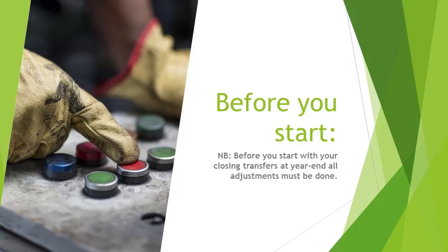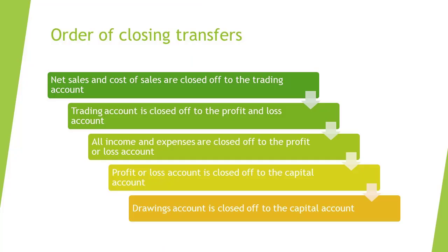Before you start with your closing transfers at year end, all adjustments must be done. The order in which accounts are closed off is as follows: First, the net sales and cost of sales are closed off to the trading account. Thereafter, the trading account is closed off to the profit and loss account. Once that is done, all income and expenses are closed off to the profit or loss account. Thereafter, the profit or loss account is closed off to the capital account.